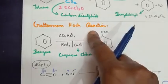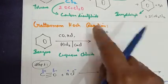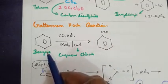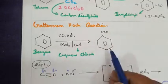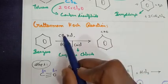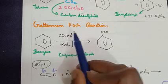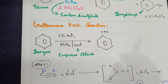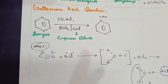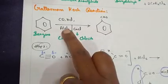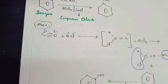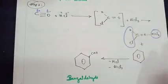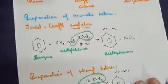So I hope you understand the Gattermann-Koch reaction. For a two-mark answer, just write: benzene is converted into benzaldehyde in the presence of carbon monoxide, hydrochloric acid, AlCl3, and CuCl. When the mechanism is asked, you need to provide all the steps.